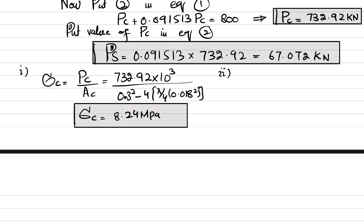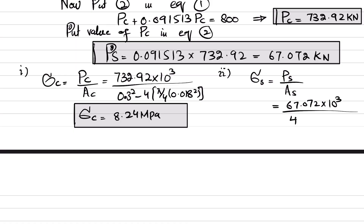The stress in the steel rods equals Ps divided by As: 67.072 times 10^3 divided by [4 times (pi/4) times (0.018)^2]. The stress in the steel rods comes out to be 65.9 megapascals. This is the final answer.